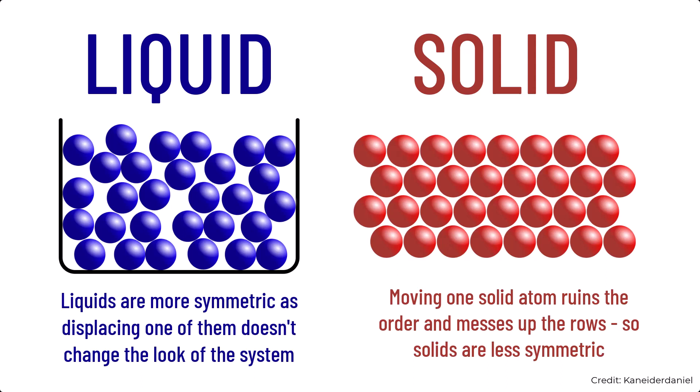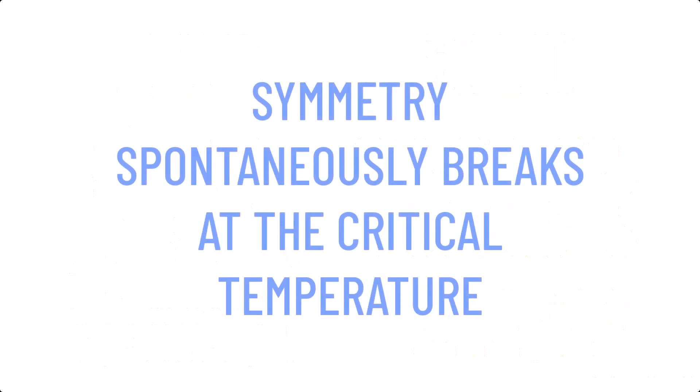Furthermore, if I was to displace a few atoms, the arrangement also looks much different. Therefore, solids have less symmetry than liquids, which essentially look the same no matter what transformations you do on them. So when the system goes below a critical temperature, a phase transition happens and the symmetry breaks.